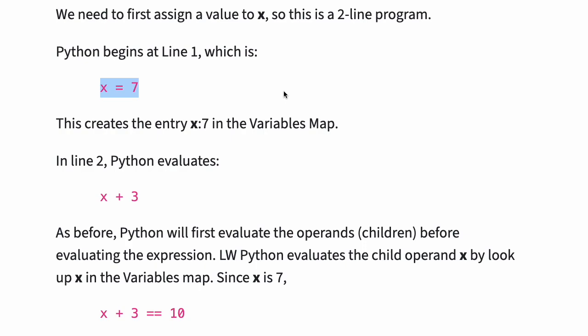This creates the entry x:7 in the variables map. In line 2, Python evaluates x plus 3.